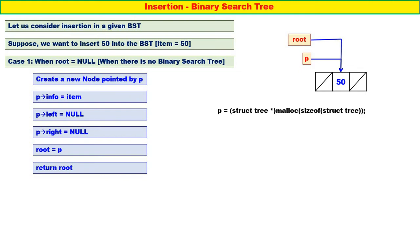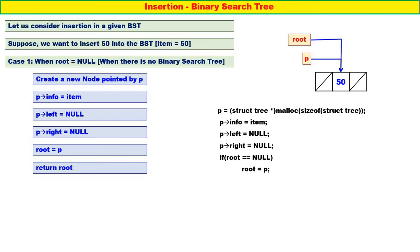The code: get a new node pointed by P. P of info is equal to item. P of left is equal to null. P of right is equal to null. If root is equal to null, root is equal to P, and return root. That's all for Case 1 — when root is equal to null, it is very simple and straightforward.